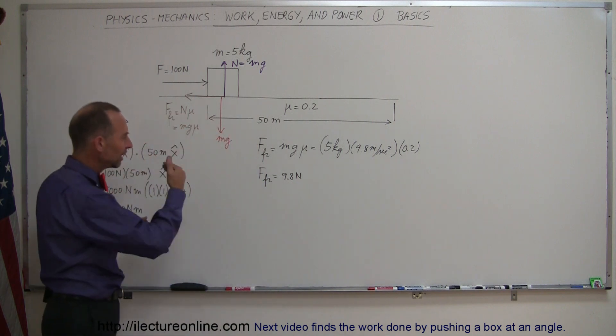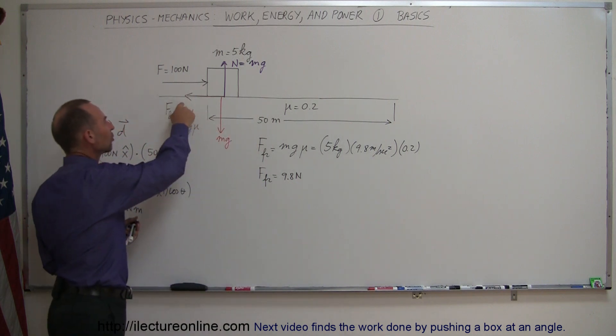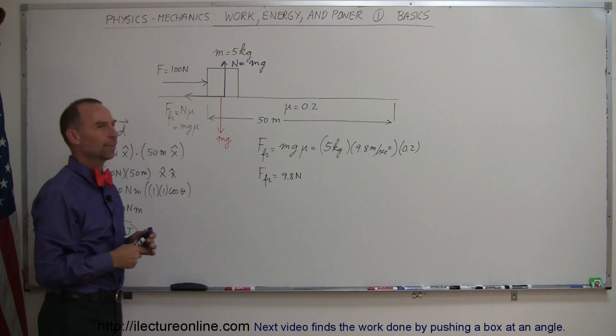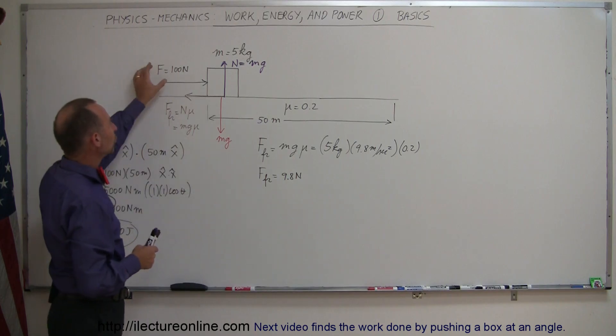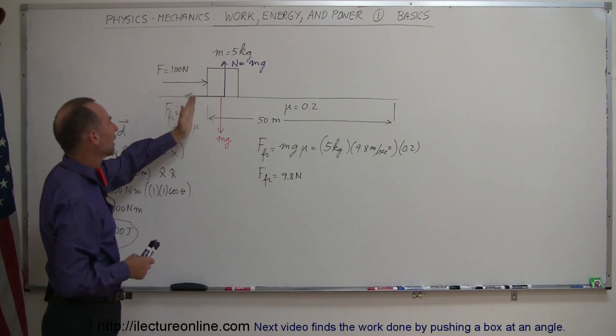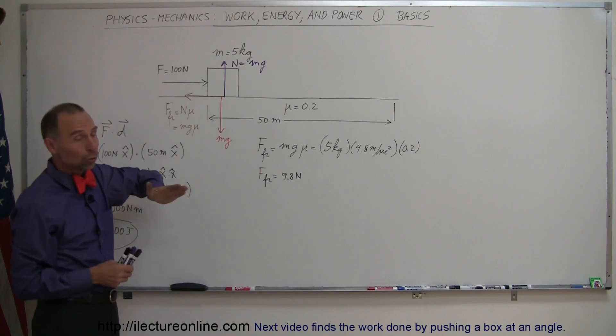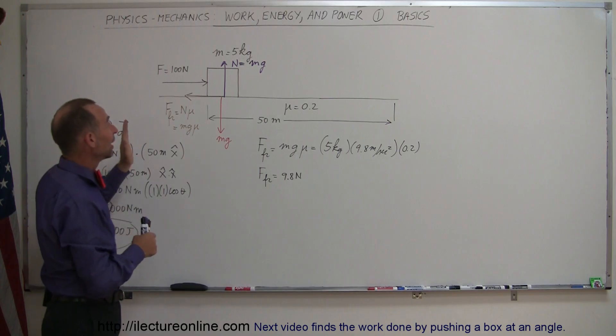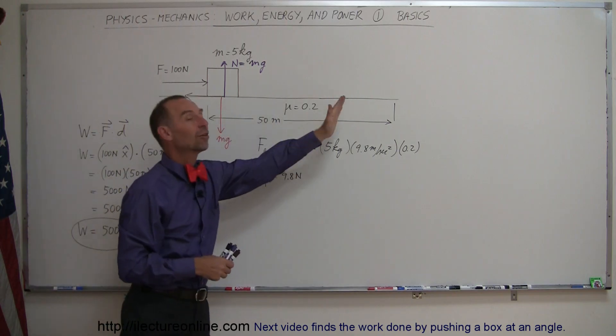And you see that that is in an opposite direction from this force right here. So, 9.8 newtons of the 100 newtons is used to overcome the friction, the other 90.2 newtons is used then to accelerate this block.